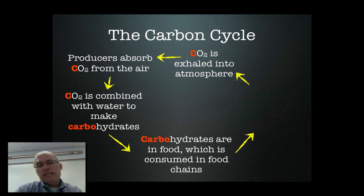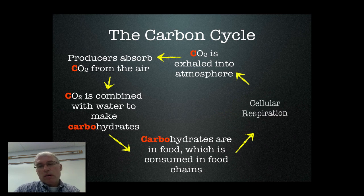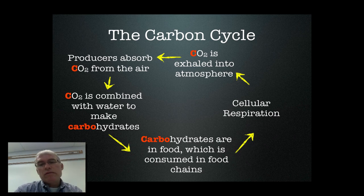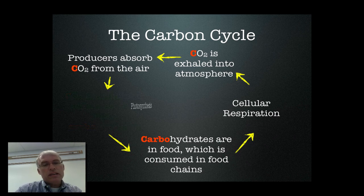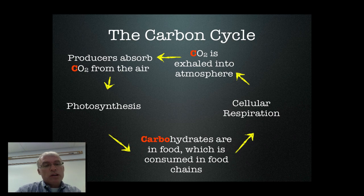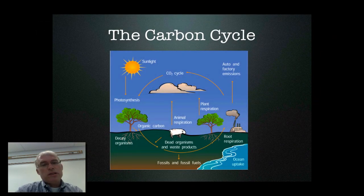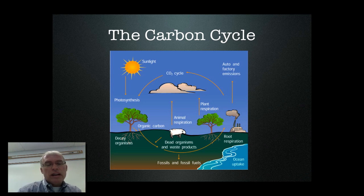We can replace burning carbohydrates for energy with the term cellular respiration. That's how animals and plants get energy out of food. And we can replace combining carbon dioxide and water with another process called photosynthesis. This picture shows the carbon cycle in a more graphic way. CO2 is in the air until photosynthesis removes it and locks it away in organic carbon or biomass.